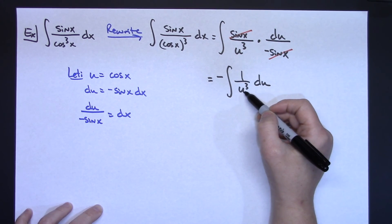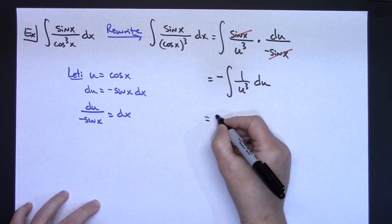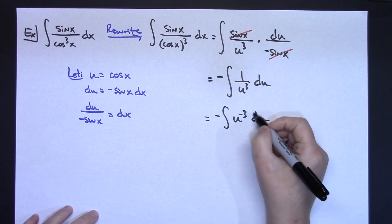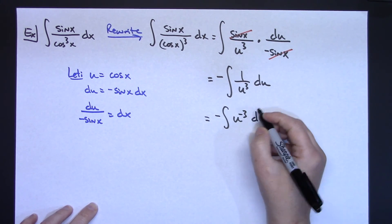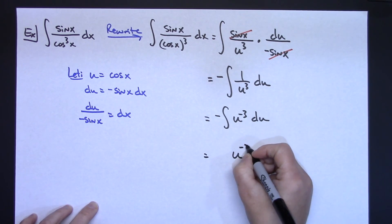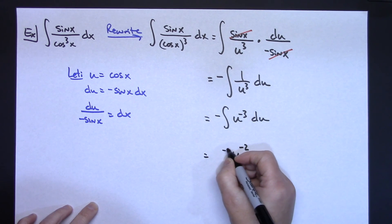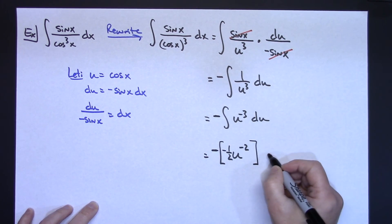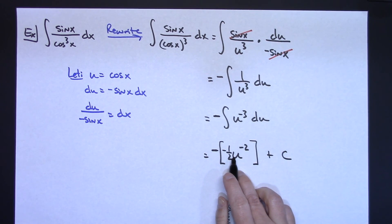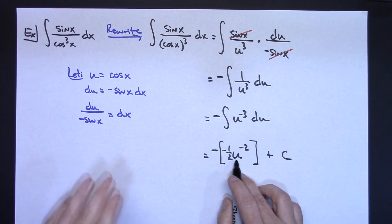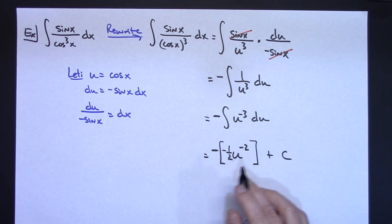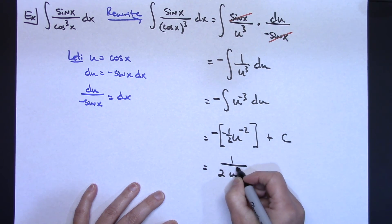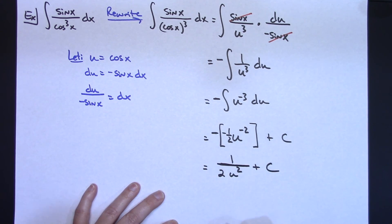To integrate, I move u³ to the numerator as u⁻³, so I have −∫u⁻³ du. I add one to the exponent: u⁻³ becomes u⁻², and multiply by the reciprocal, giving −(1/2) · u⁻² + C. A negative times a negative makes this positive. Before substituting back, I'll rewrite it cleanly with the denominator: 1/(2u²) + C.